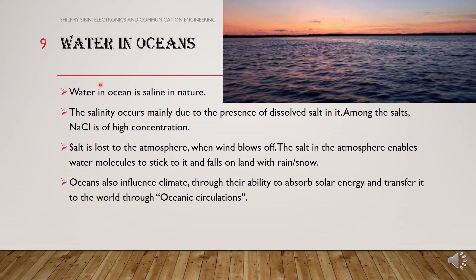Water in the ocean is saline in nature. The salinity occurs mainly due to the presence of dissolved salts in it. There are different types of salts dissolved in it, among which sodium chloride, NaCl, is most important.